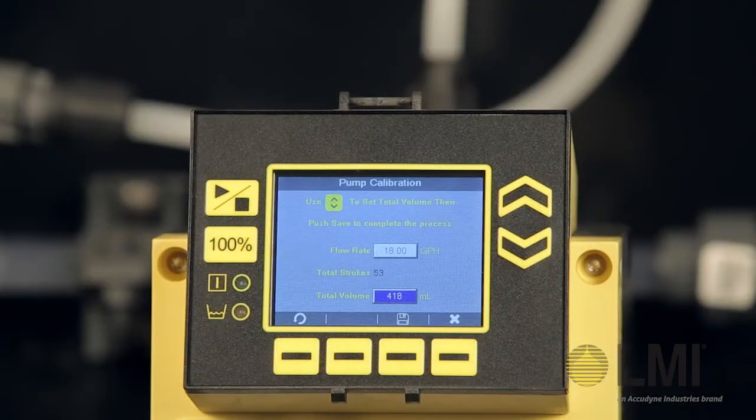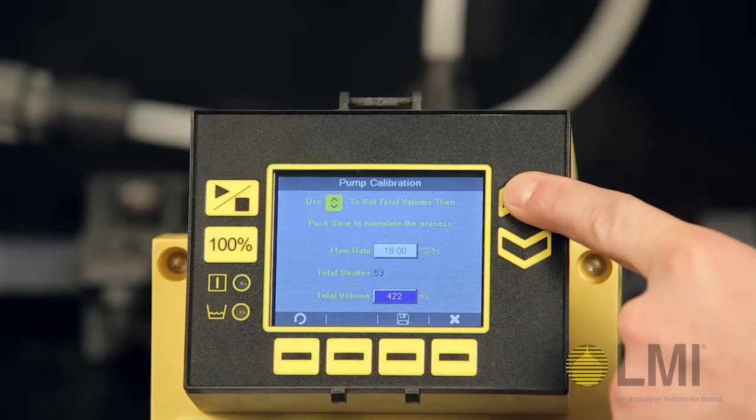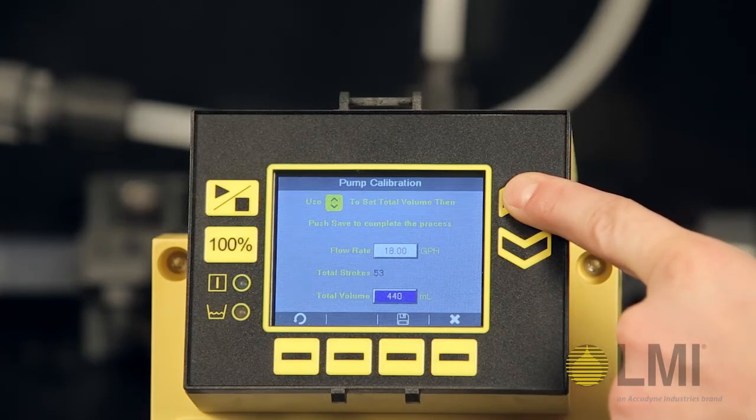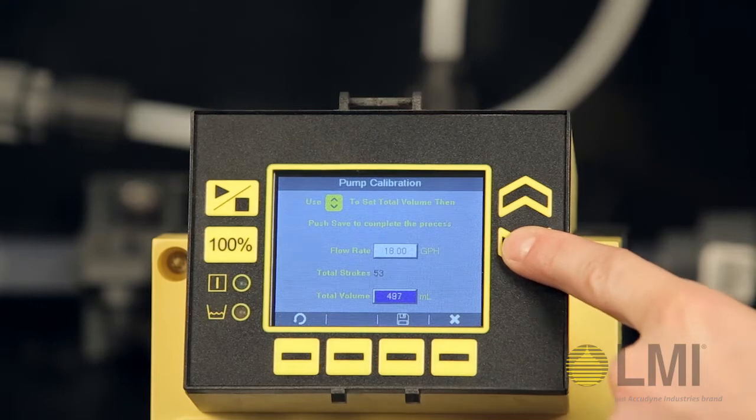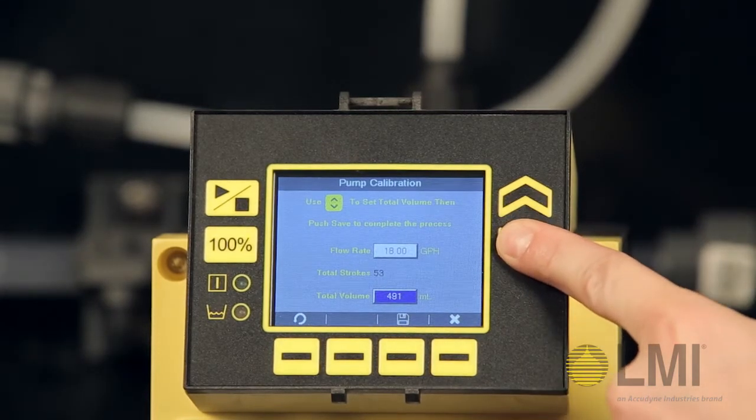We will need to adjust the total volume field area using the up-down arrow buttons on the right side of the display to match the fluid amount drawn down from the calibration cylinder. In our example, we are adjusting to 490 milliliters.